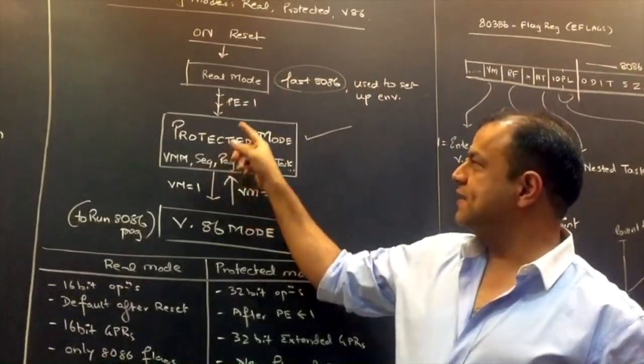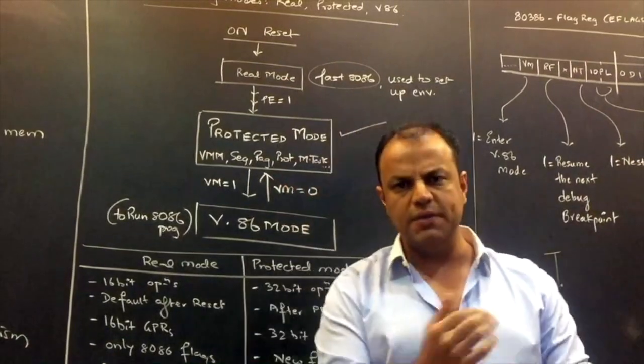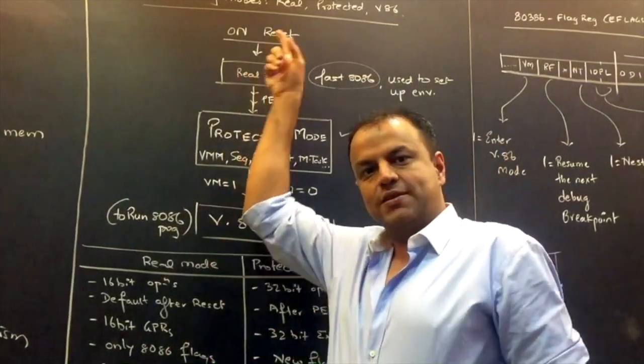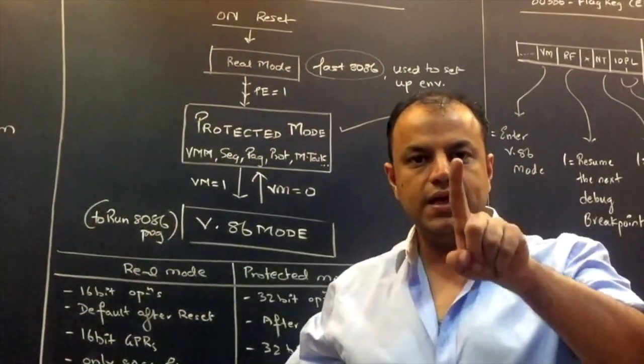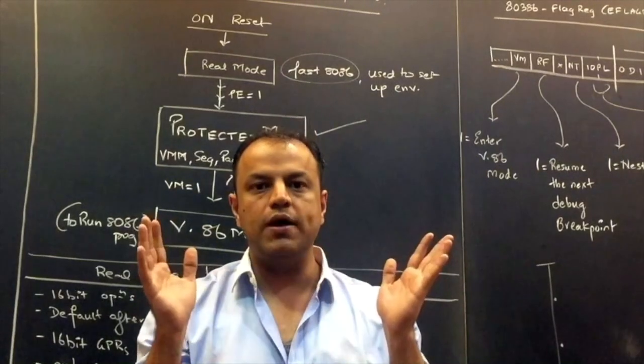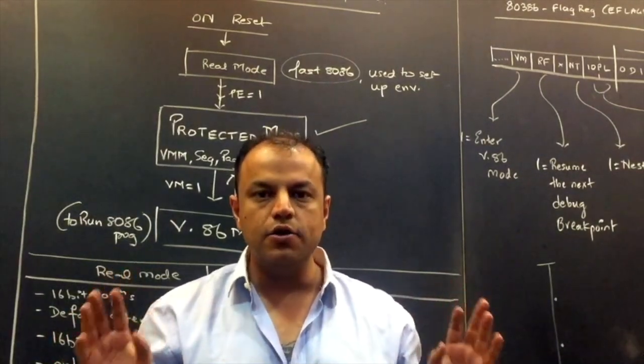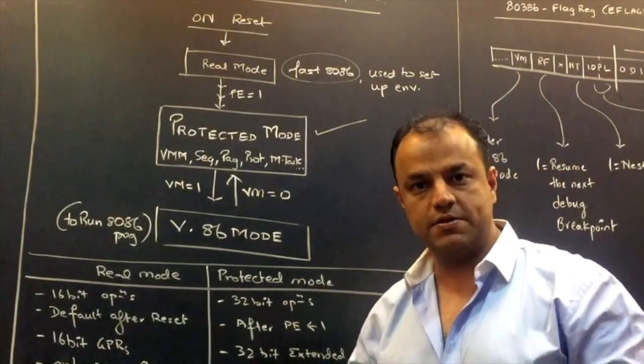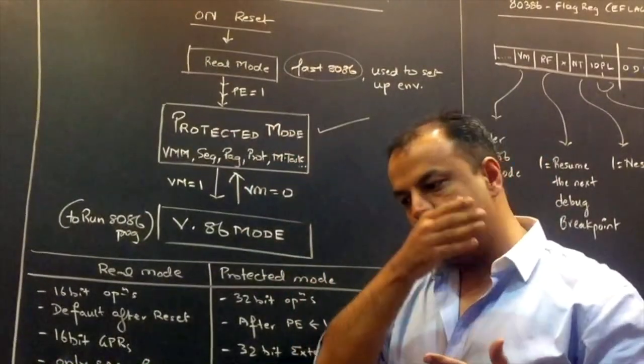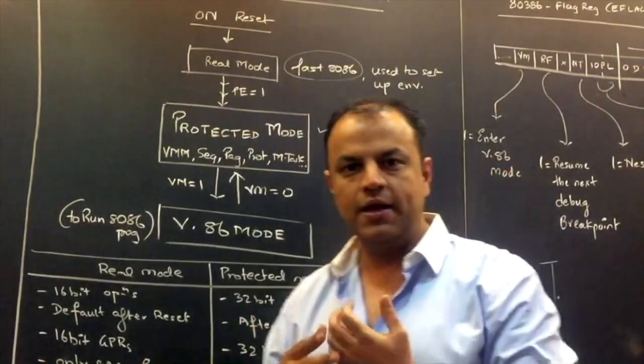Once the environment is set up, there is a bit called PE. Control register 0 has a bit called PE, stands for protection enabled. That bit is 0 by default. Once this whole environment has been set up, the program will make PE 1. As PE becomes 1, a new avatar of 386 comes into picture. Now, it works in protected mode. Now, 8086 working is gone. Everything will now work differently in the new form of 386. All these features will now come into picture because the necessary tables have been created. So now you work in protected mode. From now till the time you switch off your computer, it will be in protected mode. So, as I said, 99% of its lifetime, it spends in protected mode.